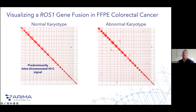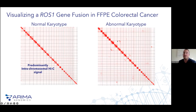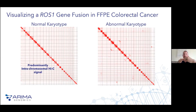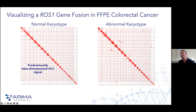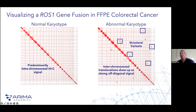In the context of a tumor genome — this happens to be a formalin-fixed paraffin-embedded colorectal tumor — you see these off-diagonal aberrations in the Hi-C heatmap. Focusing on this block here: this is the chromatin interaction space between chromosome 6 and chromosome 4. You see a really strong intra-chromosomal-like signal derived from two different chromosomes, which is abnormal relative to a healthy karyotype. This signal clues us in that chromosomes 4 and 6 have fused together — that is a structural variant. We can zoom into individual breakpoints at the gene level to determine if it's a gene fusion or if the breakpoint is in intergenic or non-coding space.